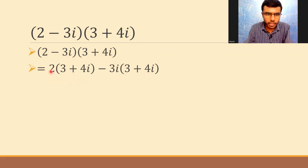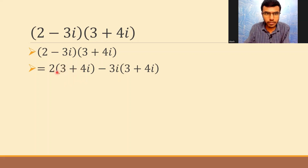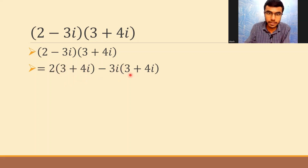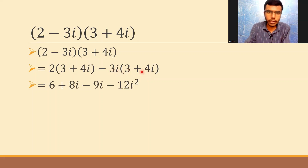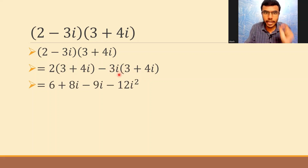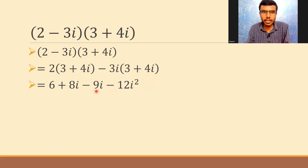Now, 2 into 3 is 6, 2 into 4i is 8i, minus 3i into 3 is minus 9i, and minus 3i into plus 4i: minus 3 into 4 is minus 12, and i into i is i squared.